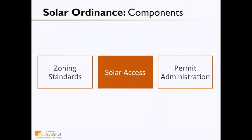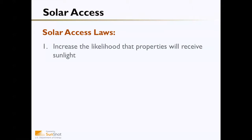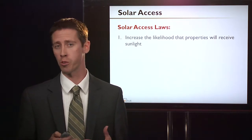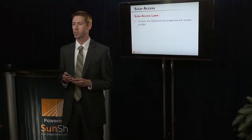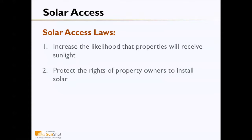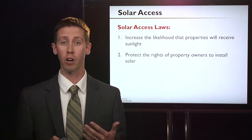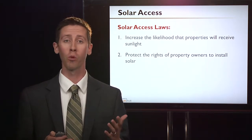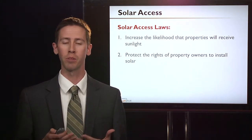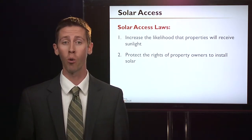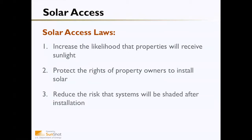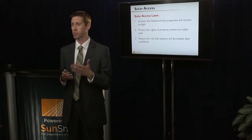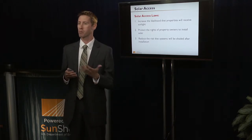Next, we'll talk about solar access and solar access laws. Solar access laws increase the likelihood that properties will receive sunlight — panels need to be unshaded and unobstructed for the homeowner or business to take advantage of the solar resource. They protect the rights of property owners to install solar, and solar access provisions can override homeowner association requirements or other restrictions that might limit a homeowner's ability to install a system. Solar access ordinances can also reduce the risk that systems will be shaded after installation by requiring vegetation to be cut if it grows and begins shading a system.